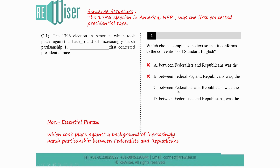Option C places a comma after the verb 'was.' We are not looking for a comma after the verb, because the verb is not part of the non-essential phrase — we need the comma before the verb, to close the non-essential phrase. So Option C can be eliminated. Option D reads: 'between the Federalists and the Republicans, was the first contested presidential race.' This is correct — the comma after 'Republicans' closes the non-essential phrase, matching our sentence structure. Option D is the correct answer.